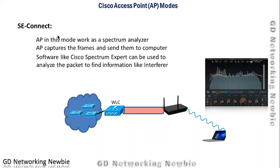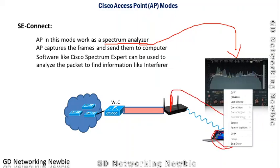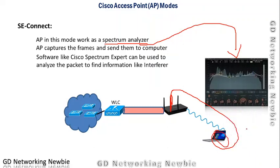In SE Connect mode — where SE stands for Spectrum Expert — the access point works as a spectrum analyzer. It captures frames and sends them to a computer running software like Cisco Spectrum Expert. That software analyzes the packets to find information such as identifying interferers — other sources that may be interfering with your wireless channel.